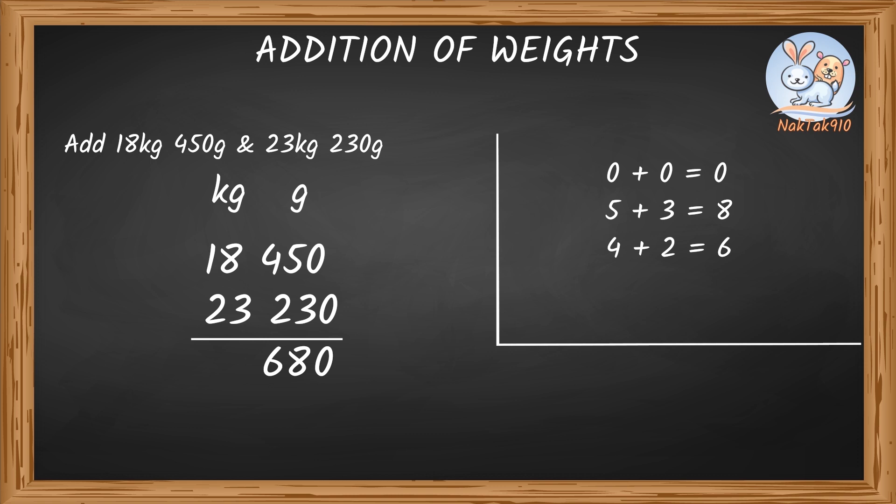Now, let's move to the kg column. 8 plus 3 is 11. Since there is a carry, we group this carry to the next most left column. Now, add the next column along with the carry. 1 plus 1 plus 2 and that's 4.